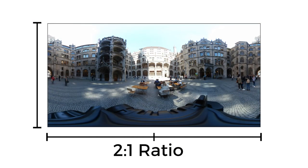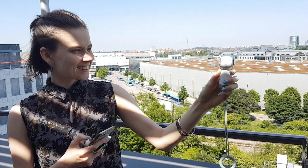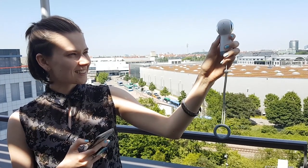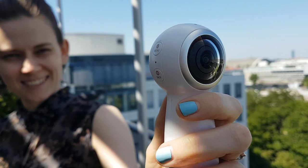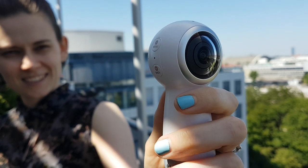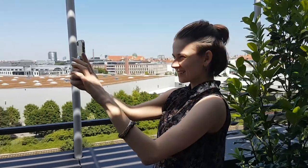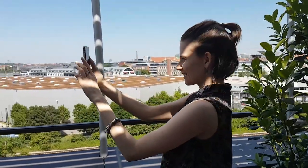Images should be in a rectangular format with a 2 to 1 ratio in order to be displayed correctly. To take your own 360-degree photos, you can use a 360-degree camera or a smartphone with this feature.